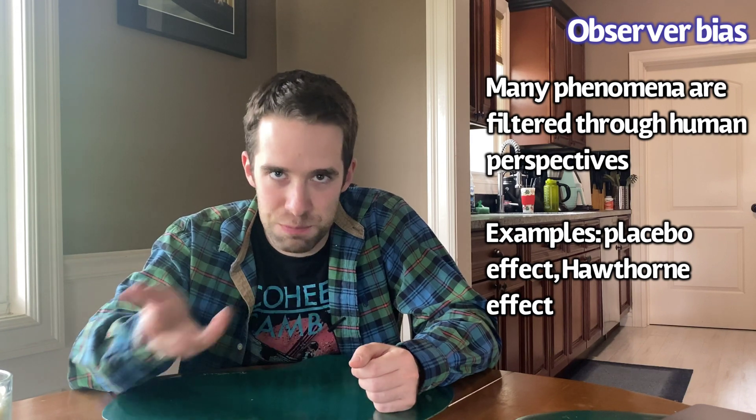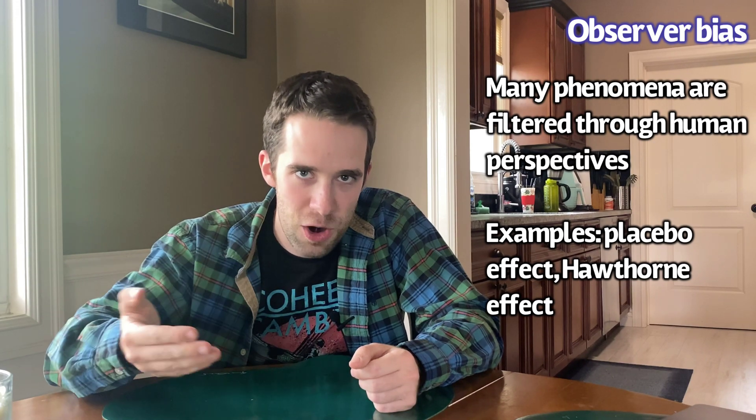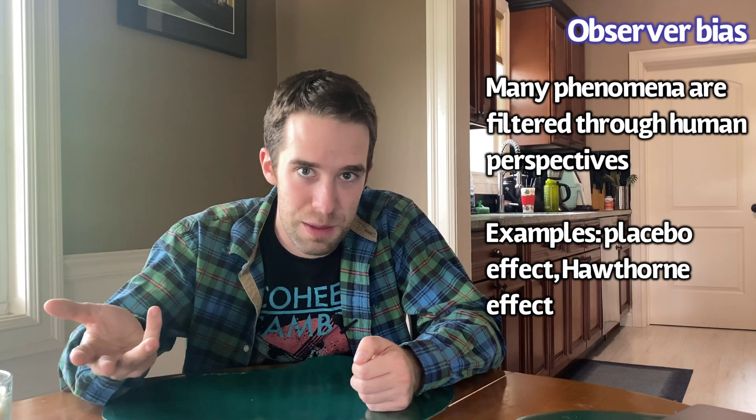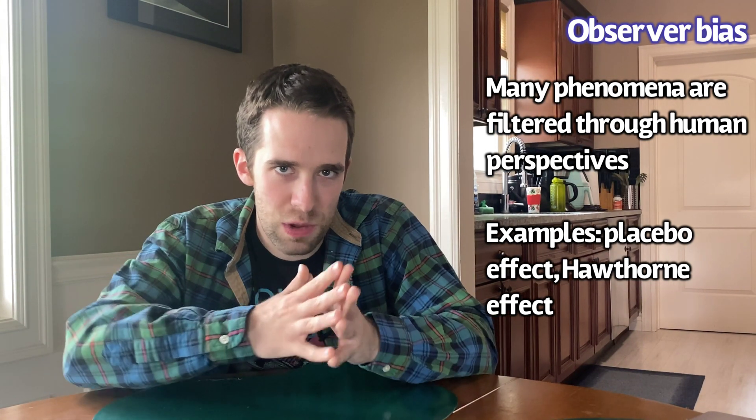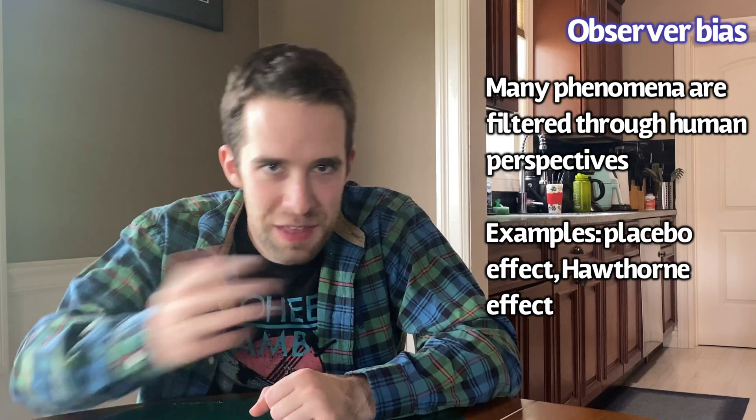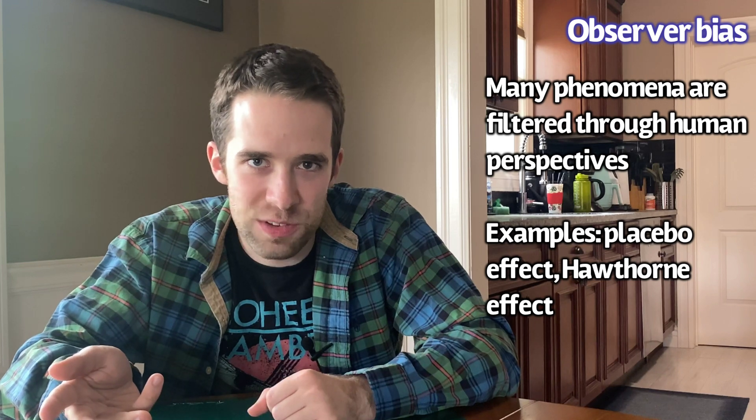This is partly the foundation for blinded studies, where the participant doesn't know what kind of treatment they've received. Some people may get a placebo drug and start to get better because their brain tells them they're going to get better — that's the placebo effect, an example of observer bias. There's also the Hawthorne effect, where people behave much differently when they know they're being observed — like when your boss is behind your shoulder watching you work, then leaves and you immediately spend 10 minutes on Instagram.